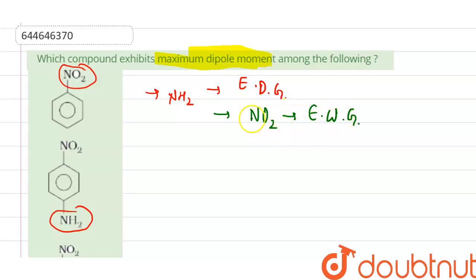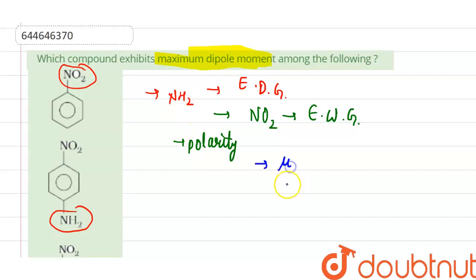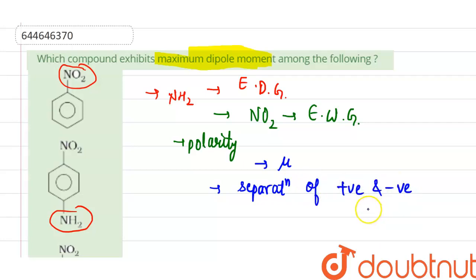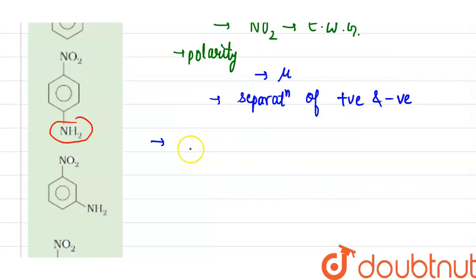Dipole moment is the measure of a system's overall polarity. Dipole moment, denoted by symbol mu, arises in a system when there is a separation of positive and negative charge. This separation of charge occurs because of electronegativity difference between two chemically bonded atoms. Dipole moment is a measure of the polarity of a system and is represented by a specific arrow symbol.